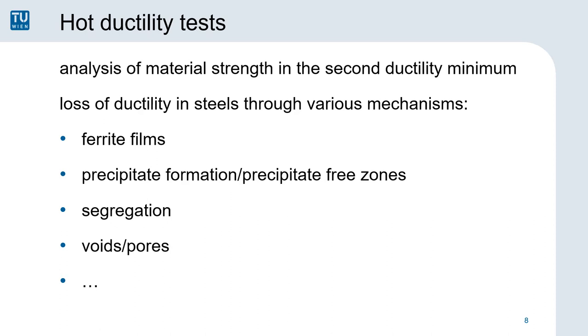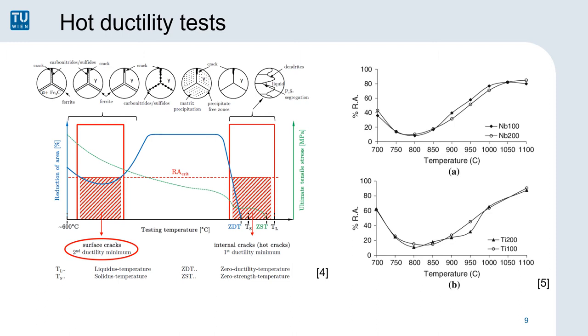Precipitates can also weaken the cohesion between austenite grains, either directly or through precipitate-free zones, where the area directly near the grain boundaries is weaker and deforms preferably. Segregation is known to weaken the interface of grains too, either directly if we see sulfur or phosphorus segregating to the grain boundaries or indirectly because of changes in nucleation or changes in phase change. Pores and voids during the creep regime can very much weaken the cross-section, but there might be several more interesting effects happening in this region which weaken the steel samples.